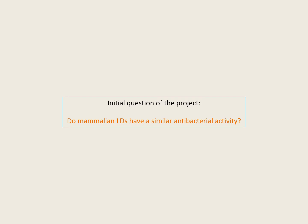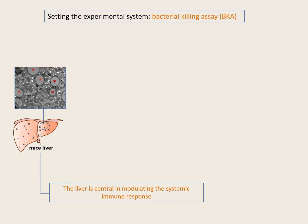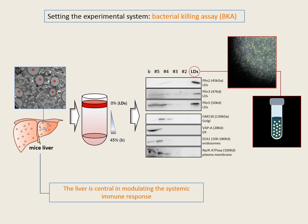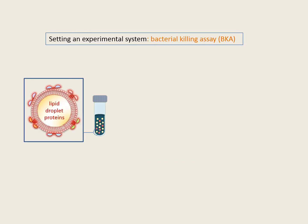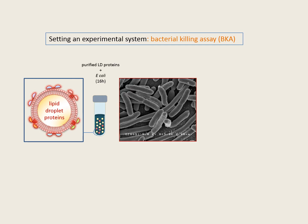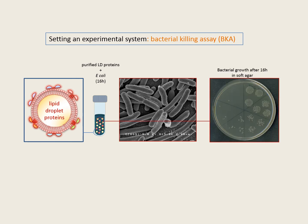The initial question of the project was whether mammalian lipid droplets have a similar antibacterial activity. To address this, we set up an experimental system working with liver, since it is a key organ in modulating the systemic immune response, and hepatocytes can be infected with pathogens related to lipid droplets. We isolated lipid droplets using a sucrose density gradient to obtain different fractions, purified the lipid droplet fraction, and extracted the lipid droplet-associated proteins. We then tested their antibacterial capacity against gram-negative bacteria, E. coli, in a bacterial killing assay where purified proteins were incubated with bacteria and bacterial viability was analyzed by plating in serial dilutions and counting colonies.